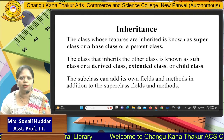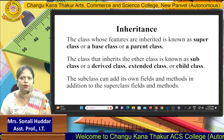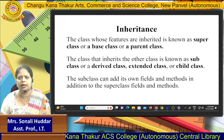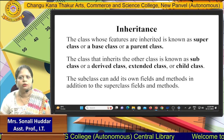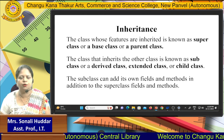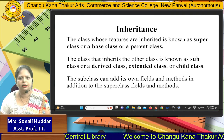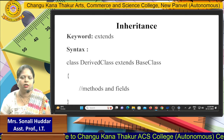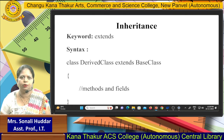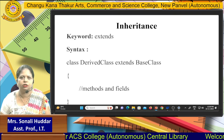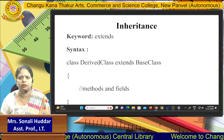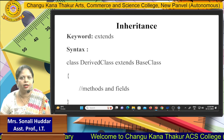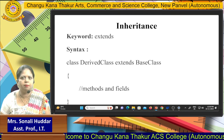The subclass can add its own fields and methods in addition to the super class fields and methods. For example, if a super class has two properties, the child class will have those two properties plus any additional ones it defines. The keyword used to inherit a class is the 'extends' keyword. The syntax is: class DerivedClass extends BaseClass.